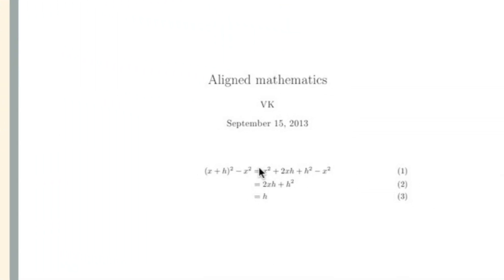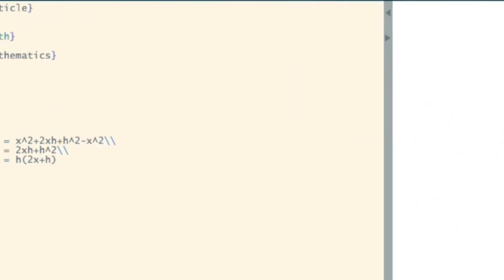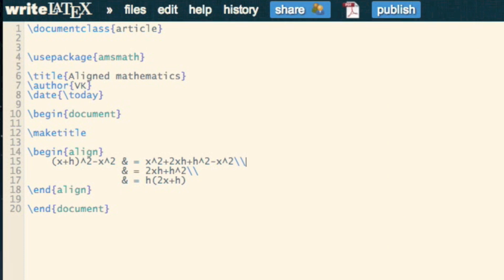If we let that compile, we see those ampersands are telling it where to align the equal signs. We can also throw in another double ampersand.